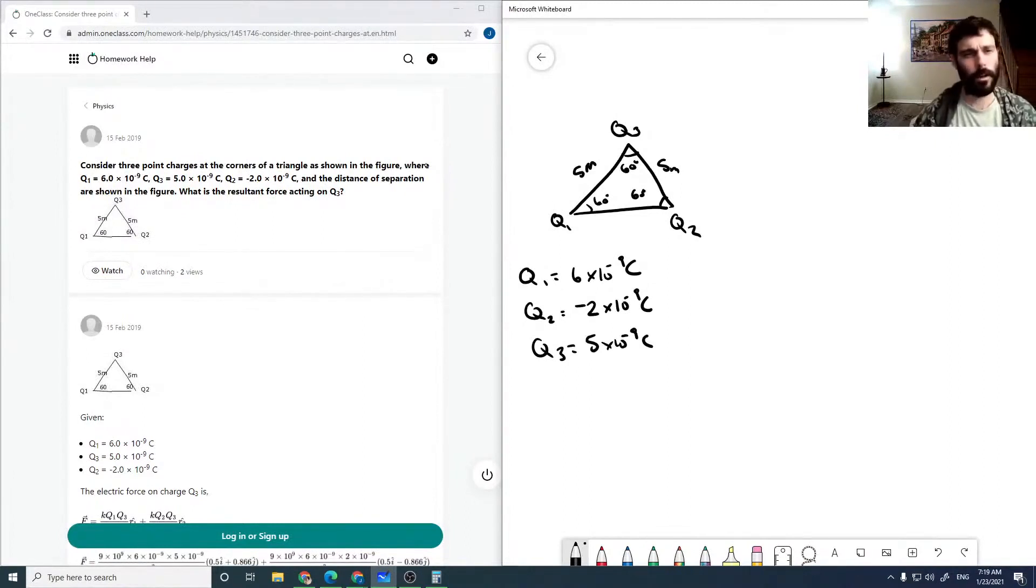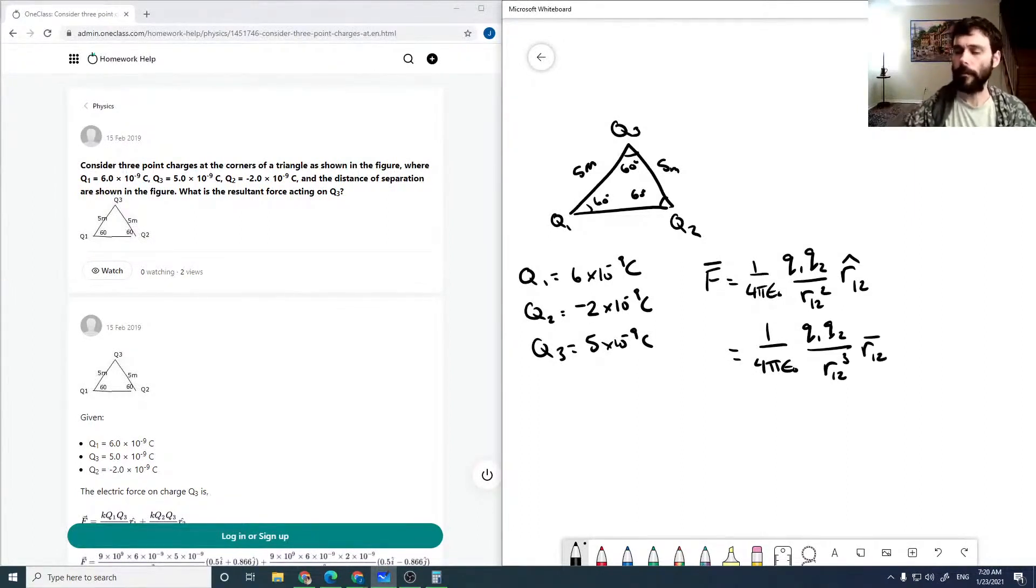We're asked to solve for the resultant force on Q3. The force is a vector quantity: 1 over 4 pi epsilon naught, Q1 Q2 over R12 squared times R12 hat, a unit vector in the direction of R12. Alternatively, we can use the vector R12.